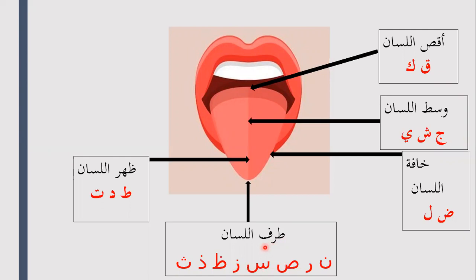And they come from tarf al-lisaan, which is the edge of the tongue. Tarf al-lisaan. Three letters: sawd, seen and zayi.